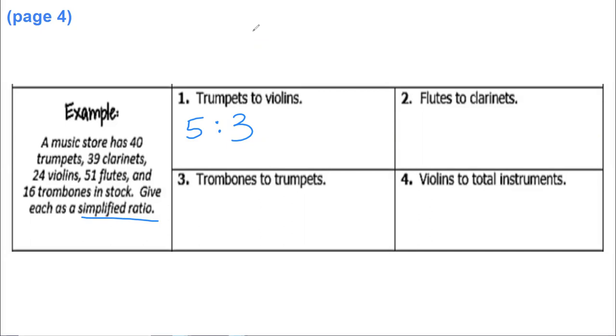It's great, literally we have 1.67 times as many trumpets as we do violins because that's what 5 divided by 3 is. All right, next one we'll do flutes to clarinets. Let's do that one next. So flutes, we have 51 flutes, and clarinets we have 39 clarinets.